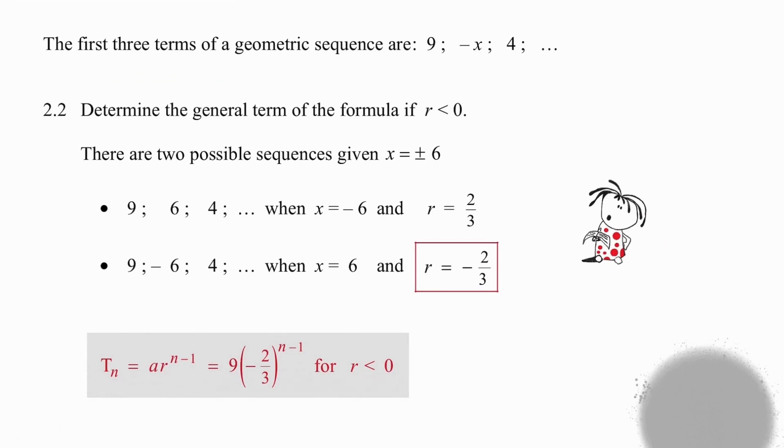In question 2.2 they have asked us to create a general term if the ratio is negative. So the first thing we have to do is establish a sequence with that negative ratio. So taking the two values that we worked out for x, if we substitute x equal to negative six we actually end up with plus six. So this doesn't work for us because we need a negative ratio but we have a positive ratio. So we start again. Substitute in x equal to six and because of the negative coefficient we will get the negative result we're looking for and now we have a ratio of minus two thirds. So going into the formula we simply replace the a value with the first term which is nine and the r value with the minus two thirds that we have worked out and now we have generated a formula for T_n. Remember that the index is always one less than the position of the term.